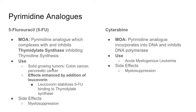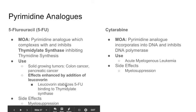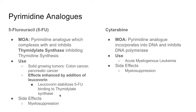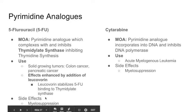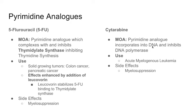5-FU is used for solid tumors, mainly colon cancer and pancreatic cancer. Its effects are enhanced by leucovorin, which stabilizes drug binding to thymidylate synthase, making it bind stronger and causing more inhibition — and consequently more myelosuppression. Cytarabine is a pyrimidine analog that incorporates into the DNA and inhibits DNA polymerase, which can't add more nucleotides. It's used for AML (acute myelogenous leukemia), and its side effect is myelosuppression.